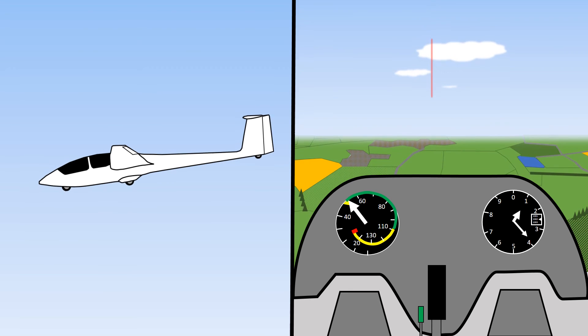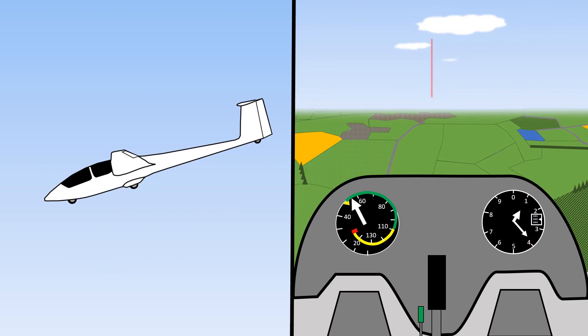To trim to a desired airspeed, you first use the stick to set the attitude and wait for the airspeed to stabilize. Once you have your desired airspeed, you move the trim until you can feel no forward or backward pressure on the stick. You can check that you have trimmed correctly by briefly letting go of the stick. The attitude and speed should remain constant.